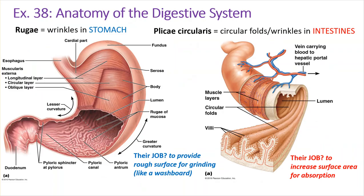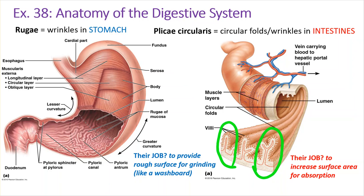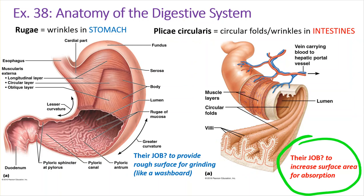Let's contrast rugae and plicae circularis. Rugae are the wrinkles on the inside surface of the stomach — like bumps on a washboard. When all those layers of muscle contract, it helps grind food against those bumps. In the intestines, you also have wrinkles called plicae circularis, which do a slightly different job. The job of plicae circularis is to increase surface area for absorption. You'll have a plicae circularis and then individual little villi on top of it — all those projections increase surface area.